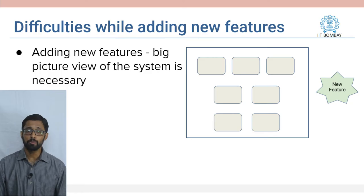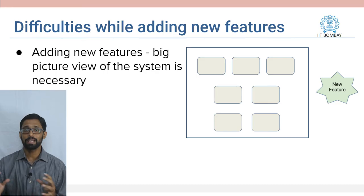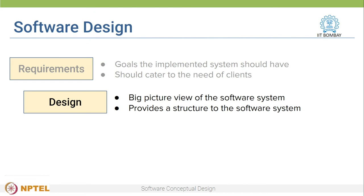Also, if I want to add a new feature later on, it would help to have a big picture view of the system so that I can decide how this new feature can be correctly integrated into the existing system. This big picture view of the system is created in the design phase of the development cycle. The design of a system is a way of organizing the code you will implement and providing a structure to the software system. After coming up with the design, then we can go into implementing the system and write code.